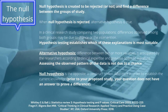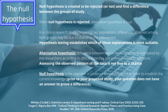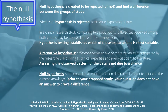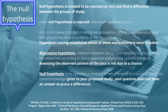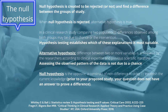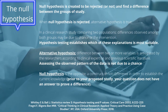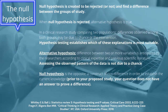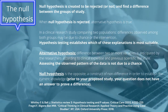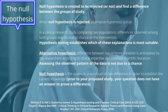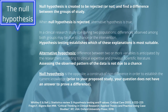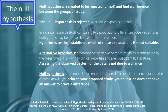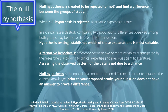It's important for us to understand the main concept of the null hypothesis. The null hypothesis, per se, is created to be rejected or not rejected in order to find a difference between the groups of study. Whenever the null hypothesis is rejected, therefore by definition, the alternative hypothesis will be true.